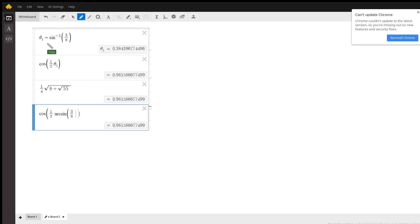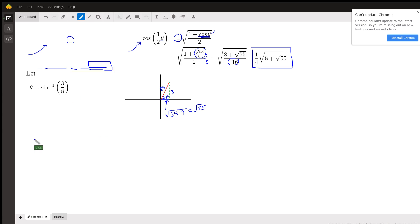And here's sort of proof that that's the case. Here's the angle that has a sine of three-eighths. Cosine of half that angle is that. There's the expression we came up with, same value. And here's the original problem, same value. Okay, there you go. Hope that helped. If you have any questions...